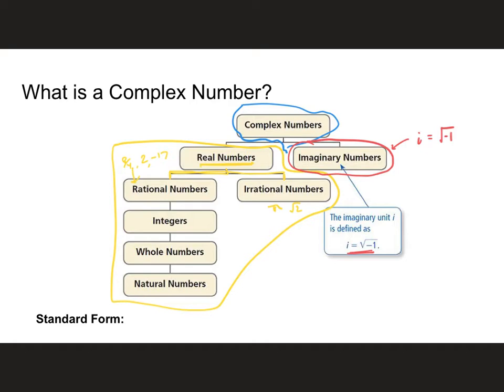So where did this number come from? Where did the square root of negative 1 come from? Mathematicians noticed that whenever you had a quadratic equation — like x squared equals 25 — you could solve it and come up with two answers. What number squared gives you 25? 5 and negative 5. And then they expanded this and looked at other quadratic equations.